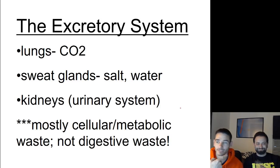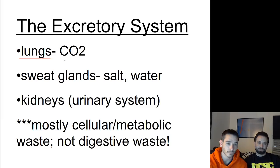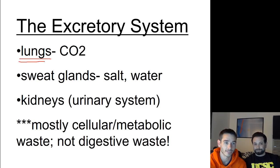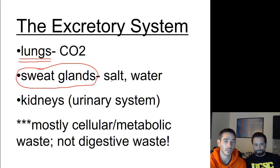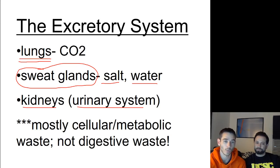Alright, hey bio, it's Mr. Jones and Mr. Hejarian back with our excretory system lecture. To start off, let's list some things that the excretory system includes — even though we might not really talk about all of them. First of all, the lungs: we breathe out CO2, so that's kind of like excreting cellular waste. Sweat glands are another part of the excretory system — we release some salt and water from them as well.